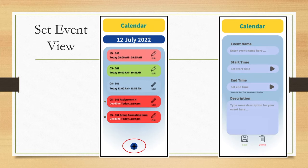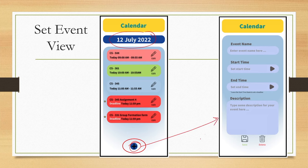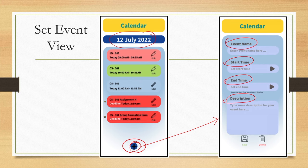We can set events for a date. If we choose a date this interface appears, and there is a button which when selected opens another interface on the right-hand side where we can mention the event name, start time of the event, end time of the event, and a brief optional description. Below we can save this event or delete it if it is not necessary to save.